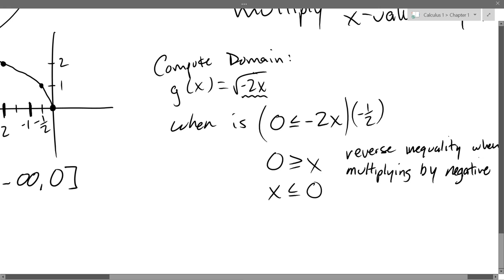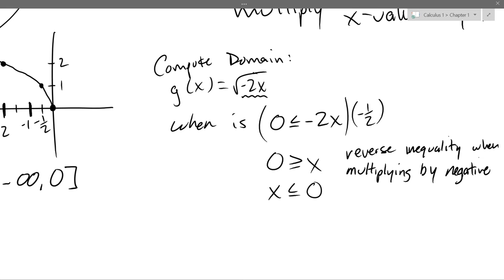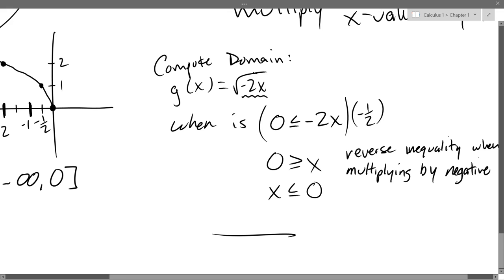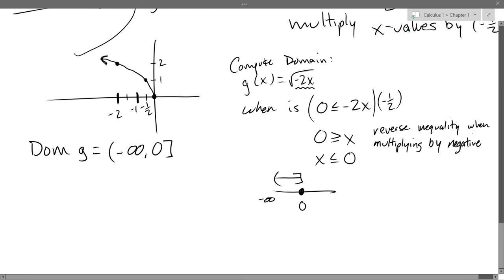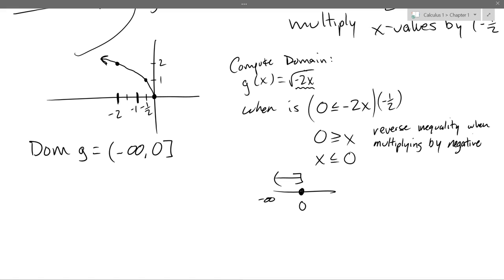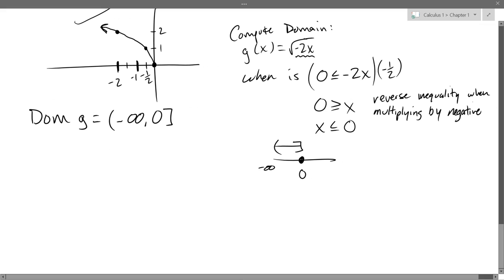Inequalities are easier to read with small on the left, big on the right: x ≤ 0. On the number line, everything to the left of 0, so the domain is (-∞, 0]. Note: when you have inequalities and multiply by anything with x in it, that could be positive or negative — your inequality is better solved with the graph for anything higher than linear.